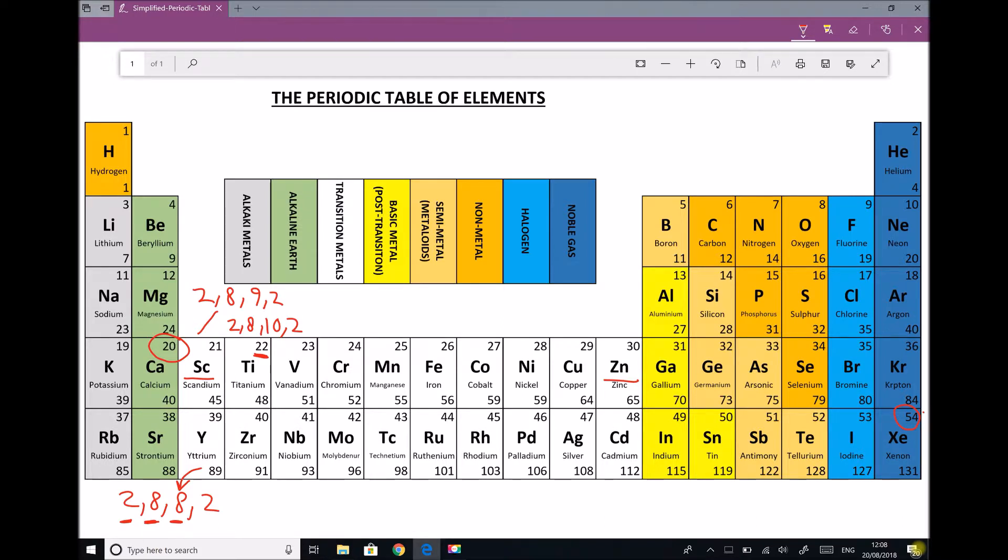Our first exception then is chromium. Now chromium we know has 24 electrons, and we know the first shell has 2. I'll just write this in the top right hand corner. We know the second shell has 8. So we know in the third and fourth shell we need to use another 14 electrons. But what happens in the case of chromium is 13 go into the third shell and 1 goes in the fourth shell.